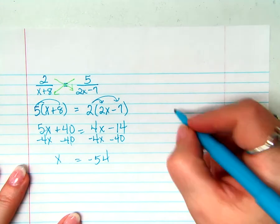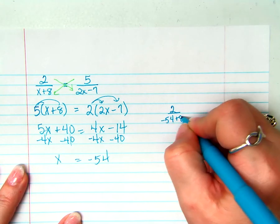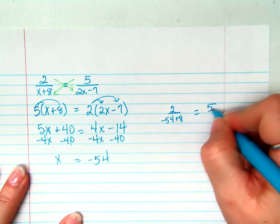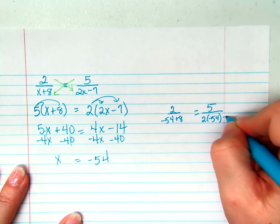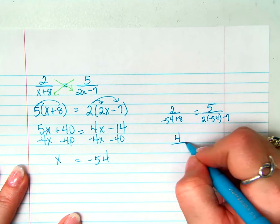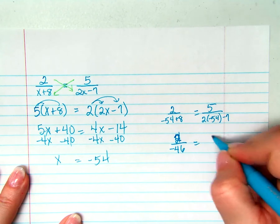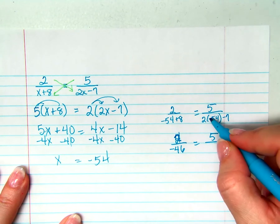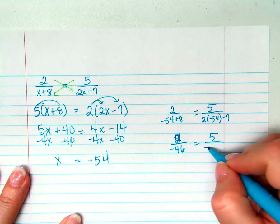How could you figure it out? Substitute it back in. So 2 over negative 54 plus 8 should equal 5 over 2 times negative 54 minus 7. Well, negative 54 plus 8 is negative 46. 5 over negative 54 times 2 is negative 108 minus 7 is negative 115.